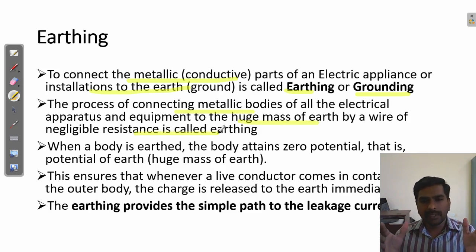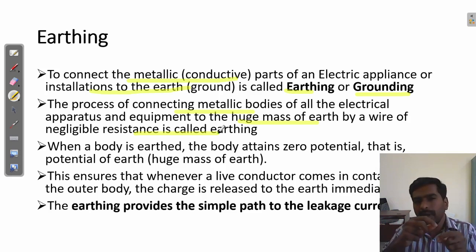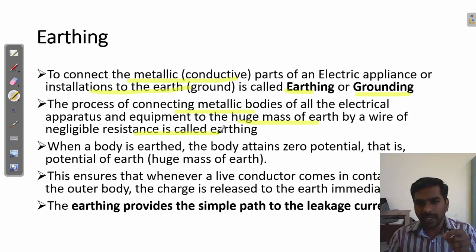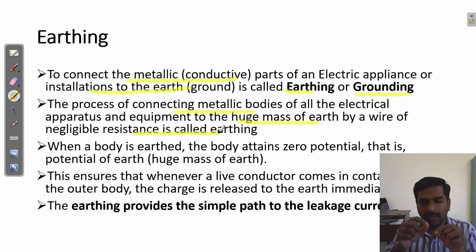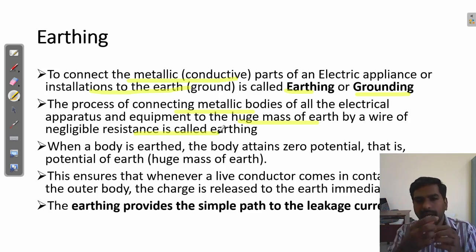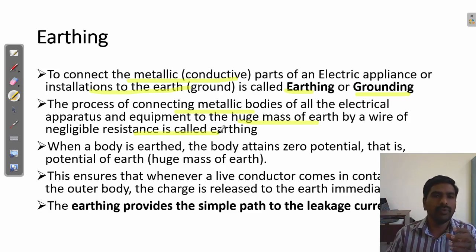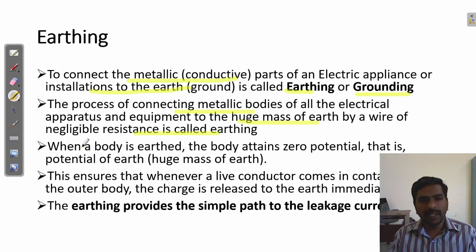We have electrical appliances — there may be power generation or some electrical equipment. That electrical body will be connected to the Earth through a conducting wire of negligible resistance. That wire should have the least resistance, so only the leakage current — whatever current there is — will easily flow through the Earth. That is called earthing.